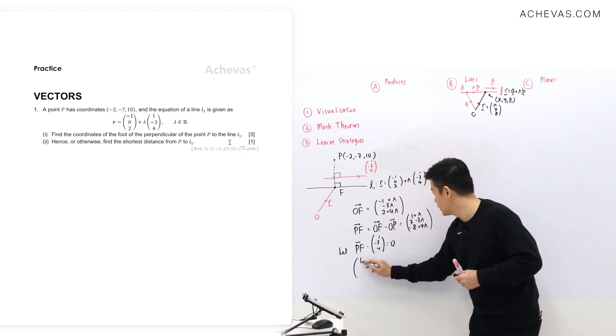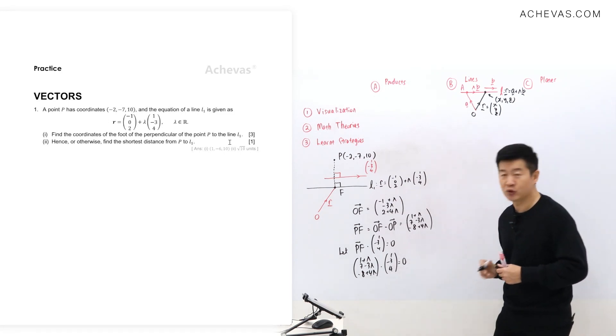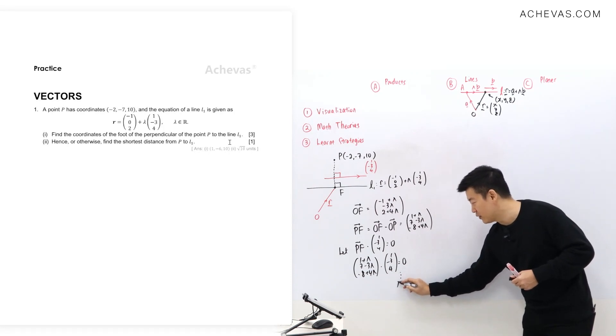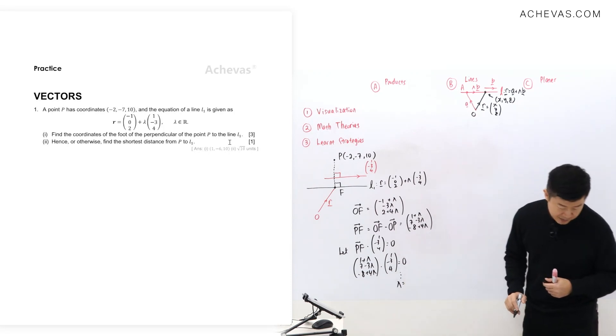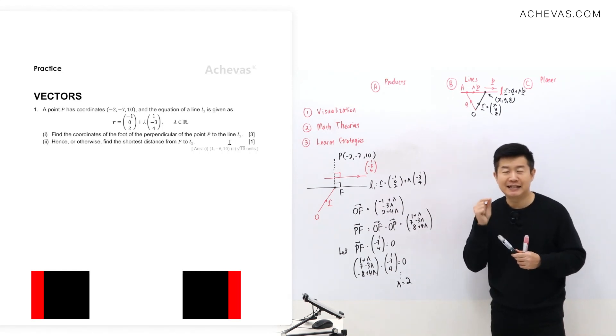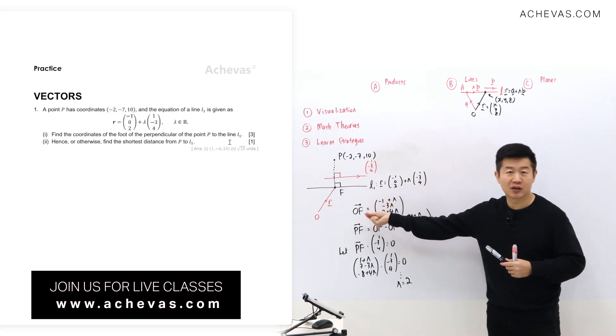So it is going to be this 1 plus lambda, 7 minus 3 lambda, minus 8 plus 4 lambda, dot 1 minus 3, 4 is equal to 0. If I were to work this out, I will be able to find the value for lambda. Lambda is going to be equal to 2. This is that specific value of lambda that gives me the position vector of F.